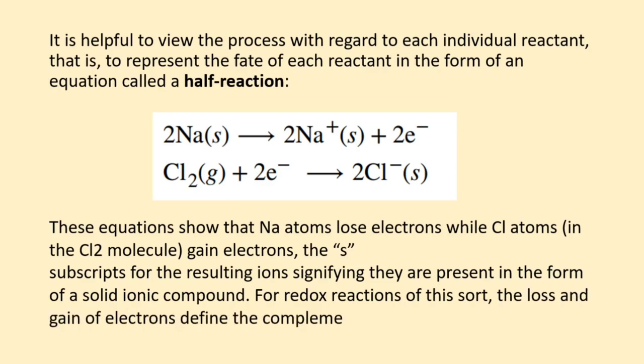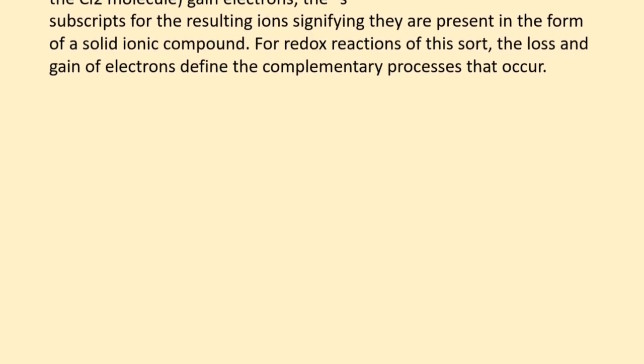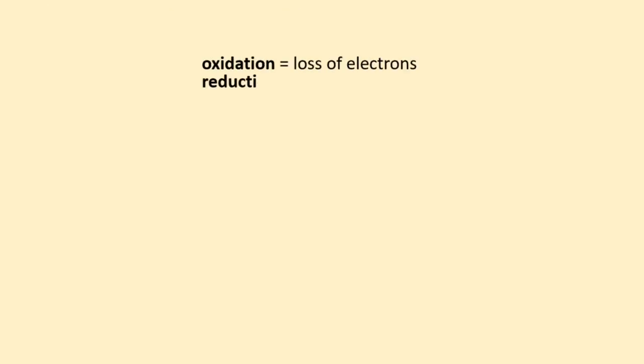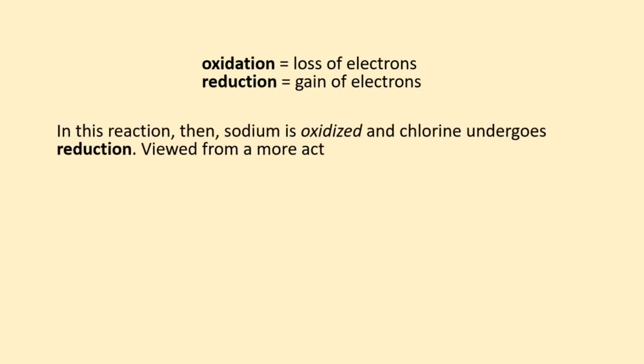For redox reactions of this sort, the loss and gain of electrons define the complementary processes that occur. Oxidation equals loss of electrons, reduction equals gain of electrons. In this reaction then, sodium is oxidized and chlorine undergoes reduction.